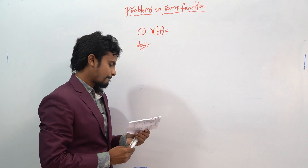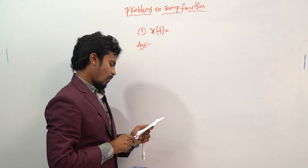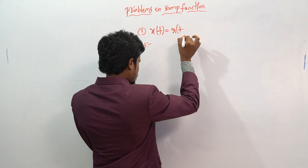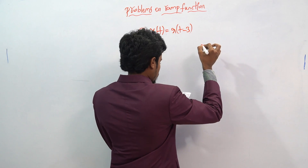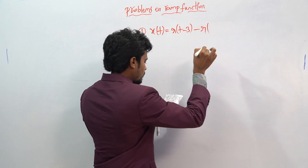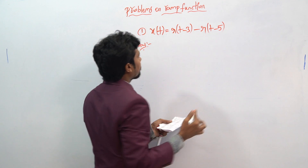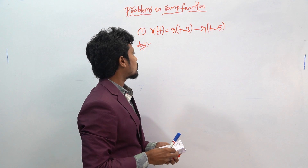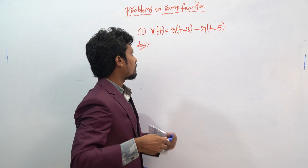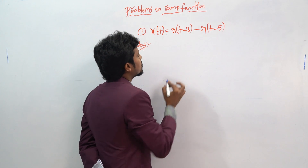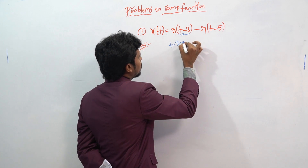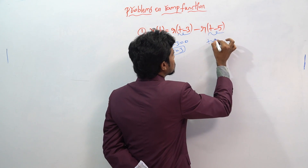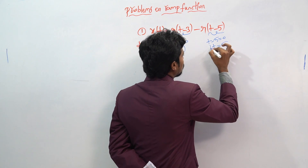The next question: x(t) = r(t-3) minus r(t-5). This is also a shifted version. Set bracket values to 0: t minus 3 equals 0 gives t equals 3, and t minus 5 equals 0 gives t equals 5.